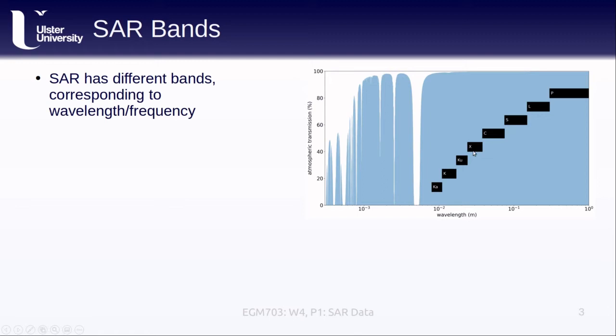Then we have X-band, ranging from 12 to 8 GHz, or about 2.5 to 3.75 cm, followed by C-band, ranging from 8 to 4 GHz, or about 3.75 to 7.5 cm. S-band, which ranges from 4 to 2 GHz, or 7.5 to 15 cm. L-band, from 2 to 1 GHz, or 15 to 30 cm. Then finally, P-band, which ranges from about 1 GHz to 300 MHz, or about 30 to 100 cm.